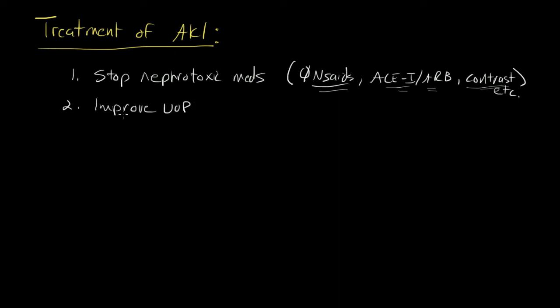The second thing you're going to do is you're going to improve urine output. Regardless of what type of kidney injury you have or whether it's oliguric, non-oliguric, or anuric, you want to improve urine output. And the way you're going to do this is that you're going to be giving lots and lots of IV fluids. The goal of your IV fluids is to improve your urine output.